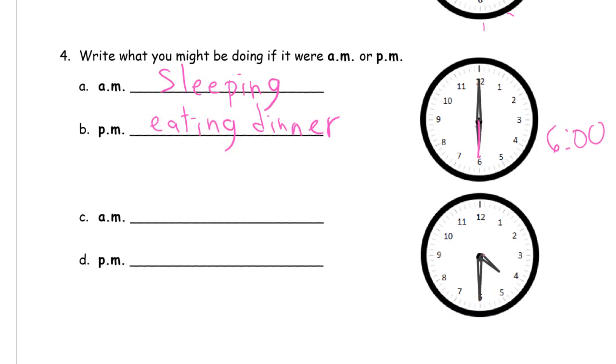All right. Now, this hour hand is in between the 4 and the 5. So that means it's 4 something. And the minutes are 5, 10, 15, 20, 25, 30. So it's 4:30.